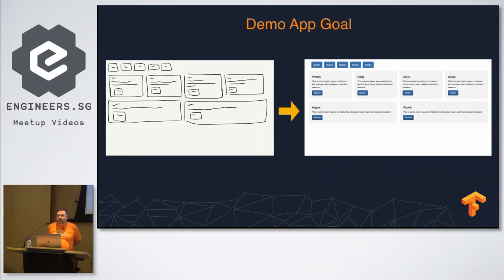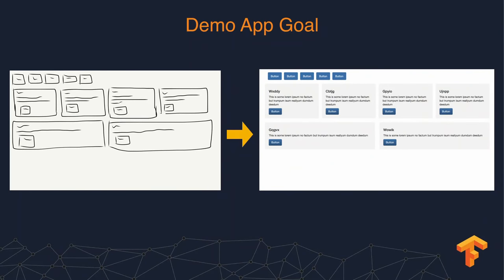I remembered reading about this paper last year and thought it was really cool. About two weeks ago I started actually reading it and thinking about how to implement it. What it basically does is: you draw a picture of a website and it turns it into code — it takes your drawing and works out how to represent that in HTML.